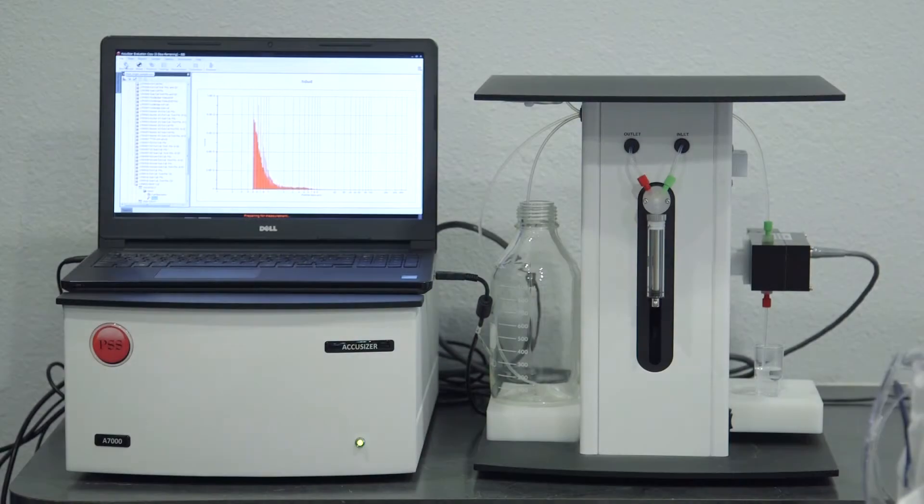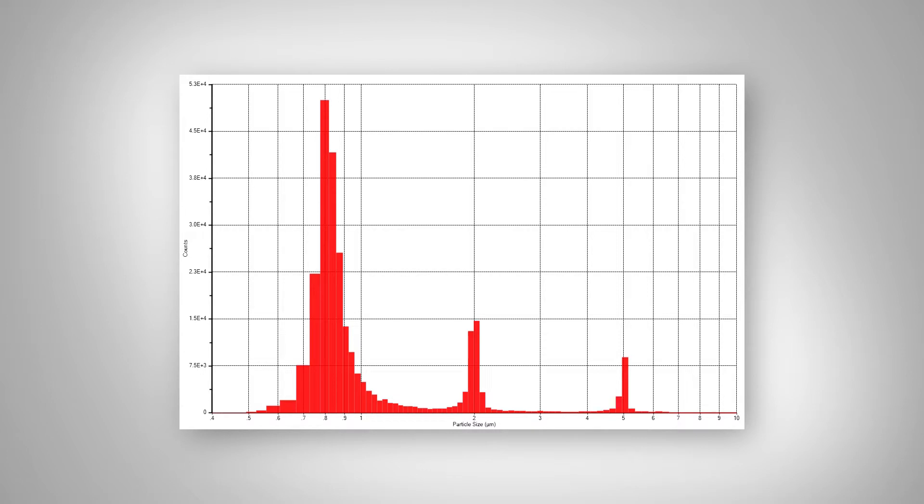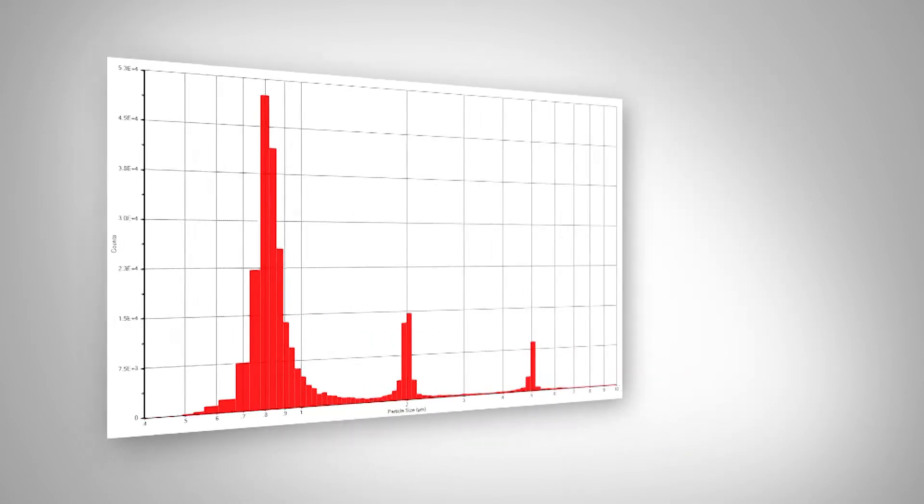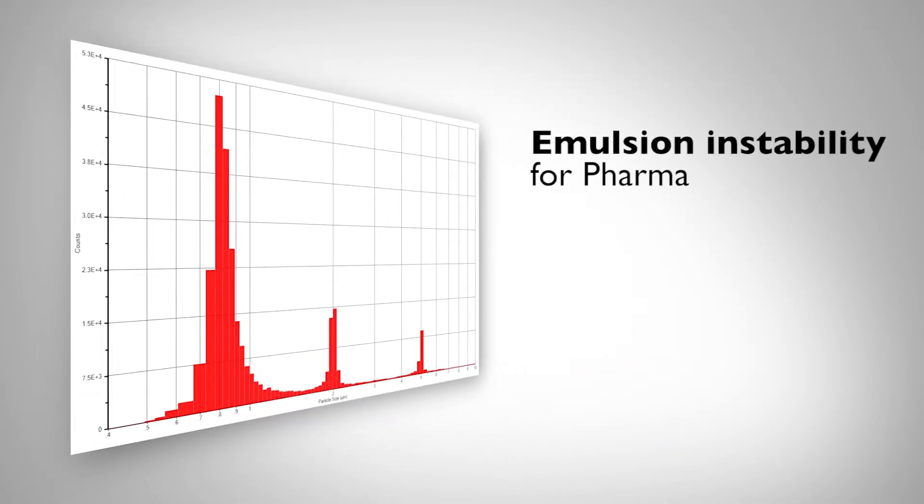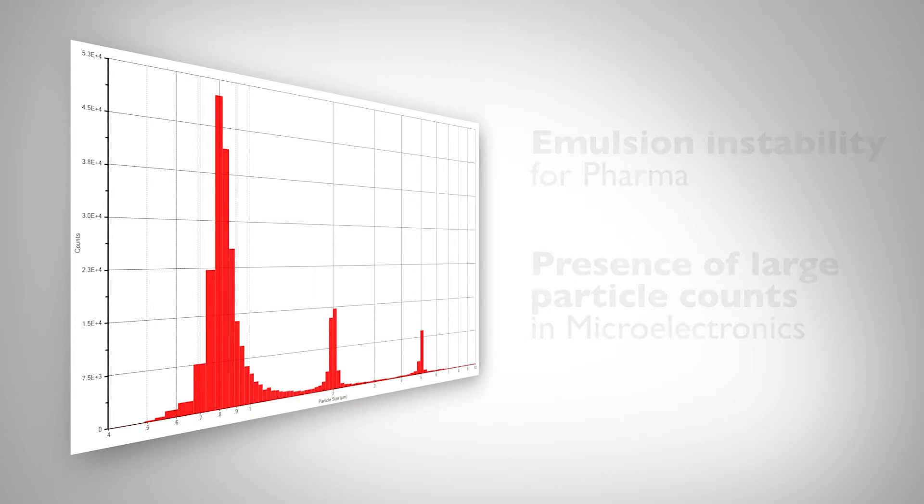The AccuSizer has the highest sensitivity of any technique for detecting tails of distributions outside of the main population. These large particle tails can indicate emulsion instability in the pharmaceutical industry or the presence of large particle counts that scratch wafers and reduce yields in the microelectronics industry.